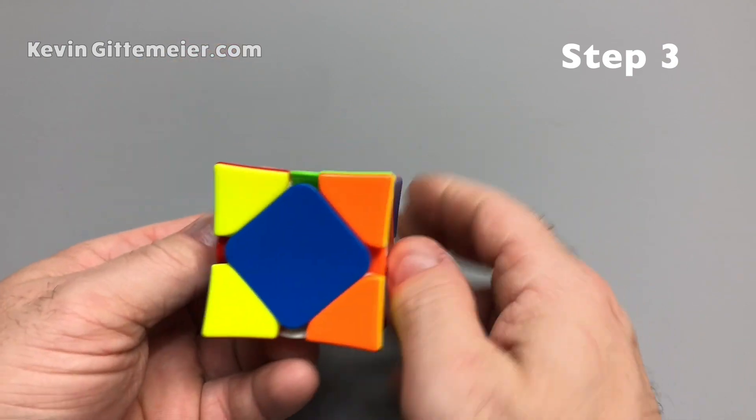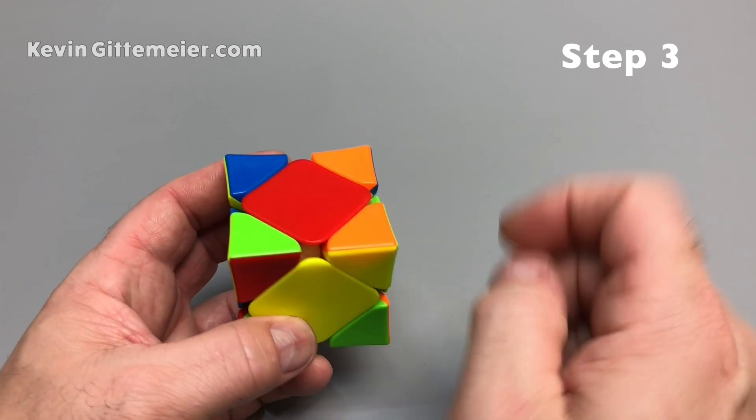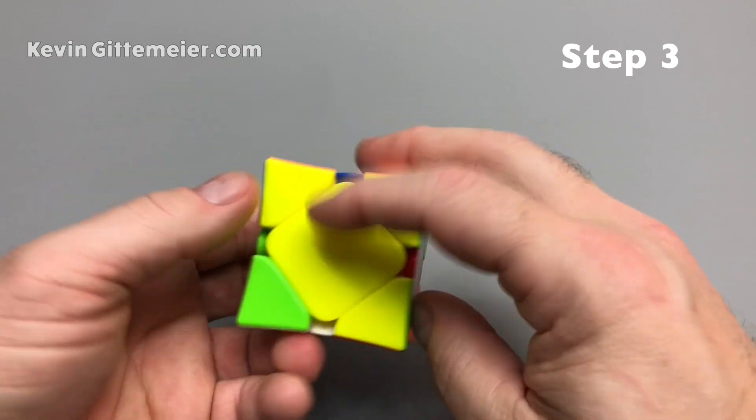I do that sequence down, down, up, up, which sets up no fish and prime this one to be moved to the top. Down, down, up, up.